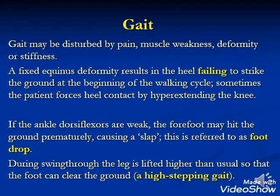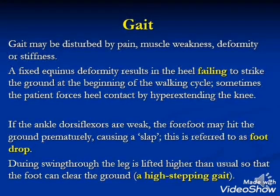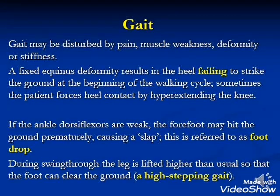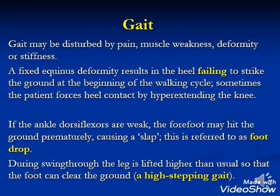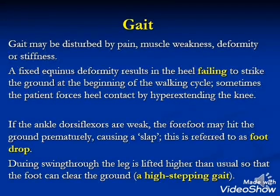Gait may be disturbed by pain, muscle weakness, deformity, or stiffness. A fixed equinus deformity results in the heel failing to strike the ground at the beginning of the walking cycle; sometimes the patient forces heel contact by hyperextending the knee. If the ankle dorsiflexors are weak, the forefoot may hit the ground prematurely, causing a slap — referred to as foot drop. During swing-through, the leg is lifted higher than usual; this gait is called high-stepping gait.